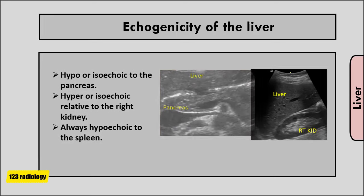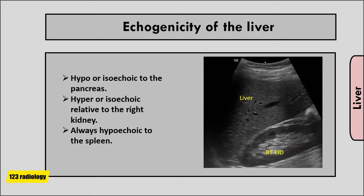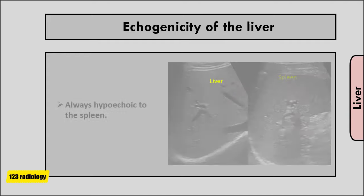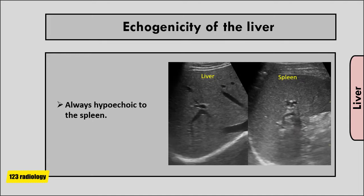Looking at images, we see the liver adjacent to the right kidney, and the liver is hyperechoic relative to the right kidney. In another example showing the liver and spleen, the liver is hypoechoic relative to the spleen.